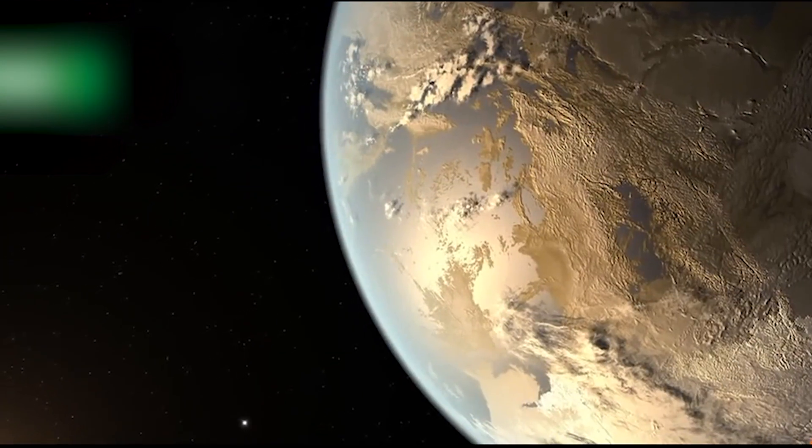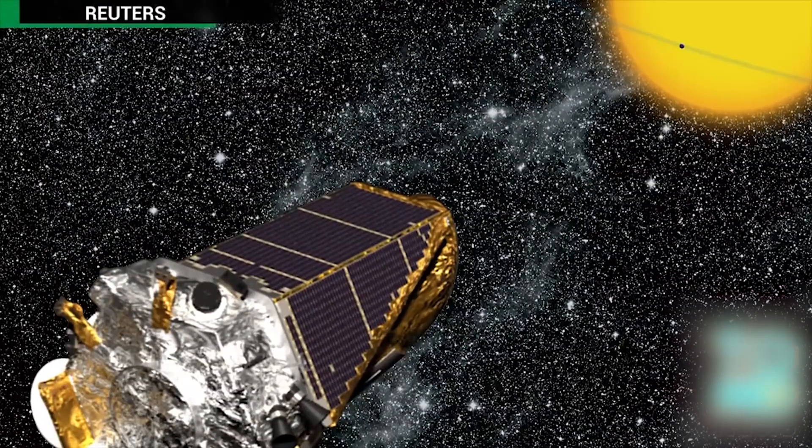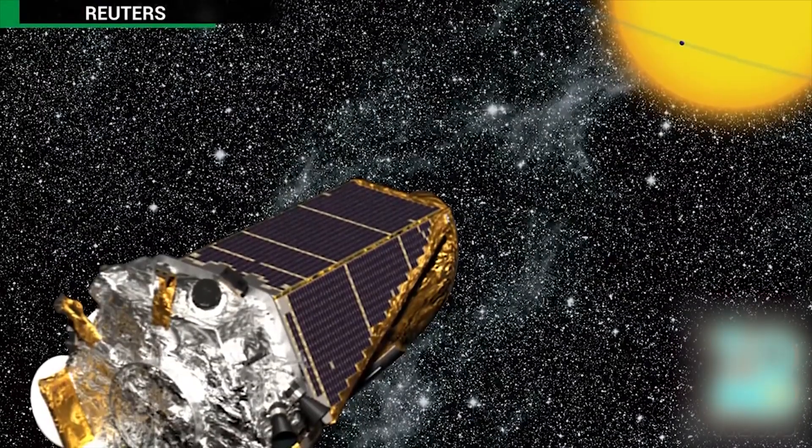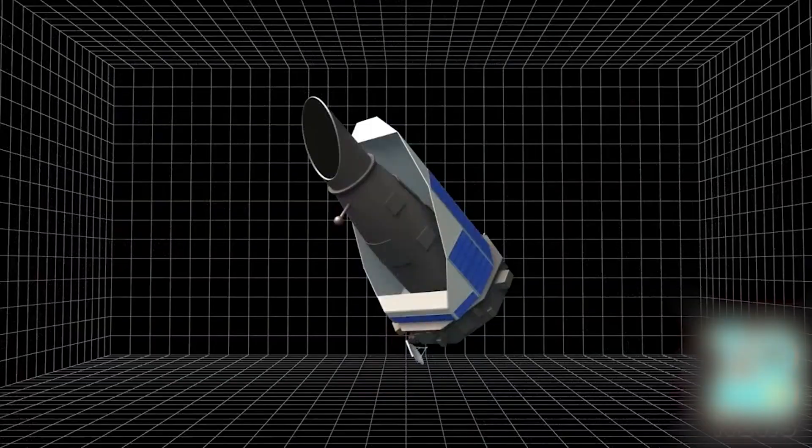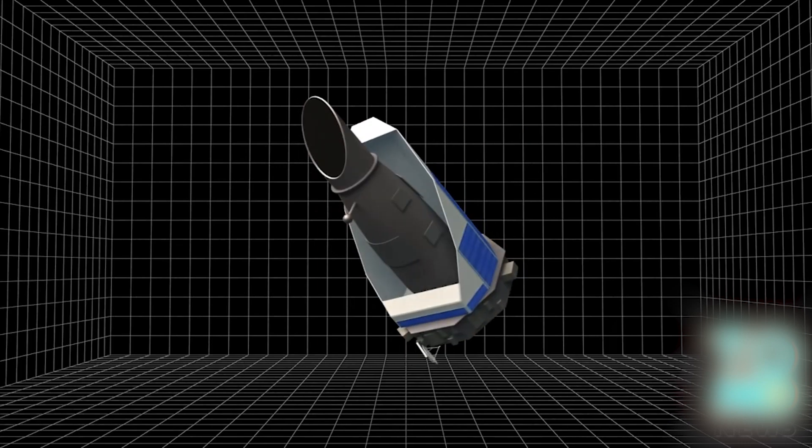Earth-like planet discovered by scientists. Scientists have discovered an Earth-like planet that lies near the edge of its star's habitable zone. NASA's Kepler Space Telescope discovered the planet by measuring the amount of starlight blocked when it passed in front of its star.